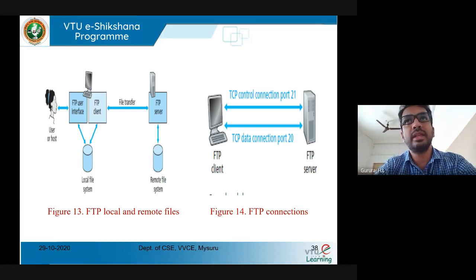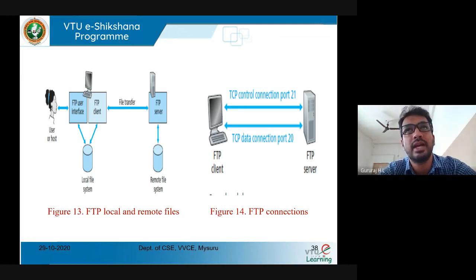For setting up a connection, FTP uses the control connection. To transfer data, it uses a separate data connection — not the same connection. Let's assume we have a client and server. The client wants to fetch files from the server, so it sends a connection request to port number 21 on the server. In that control connection request, the client sends its password and authorization details. The basic information of client and server is exchanged, and if the control request is accepted by the server, it sends back a status code such as OK.